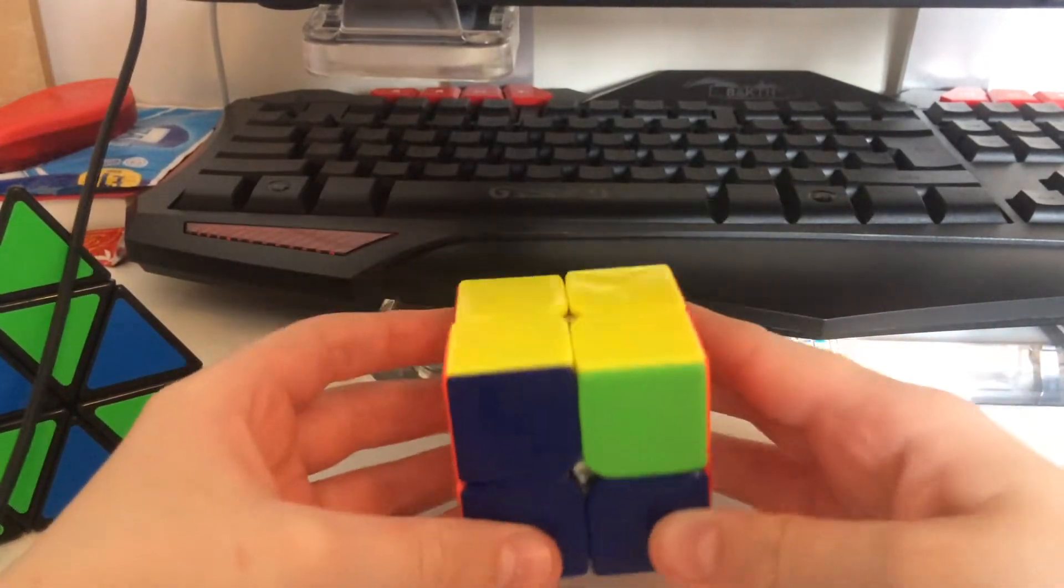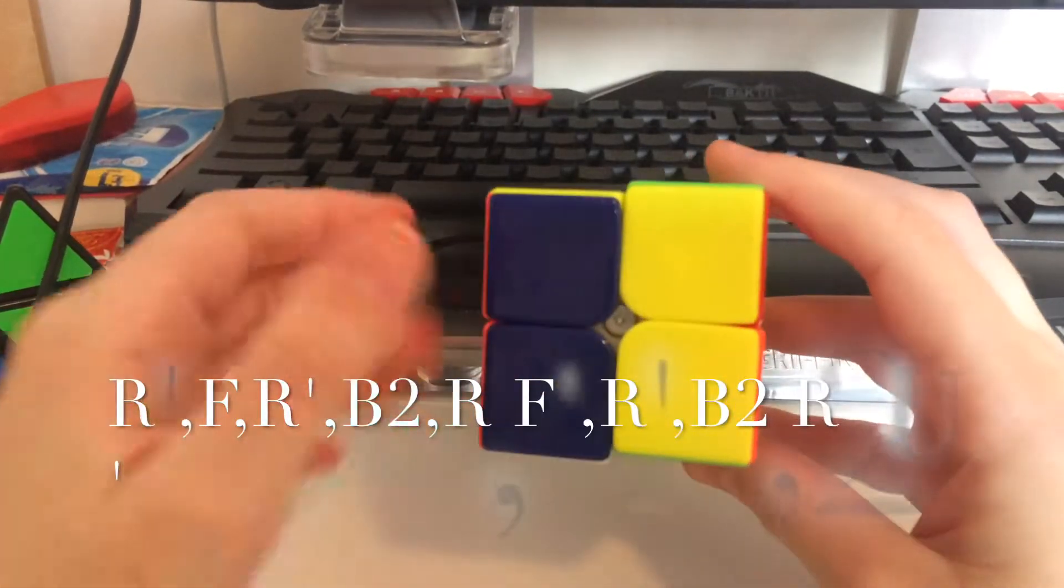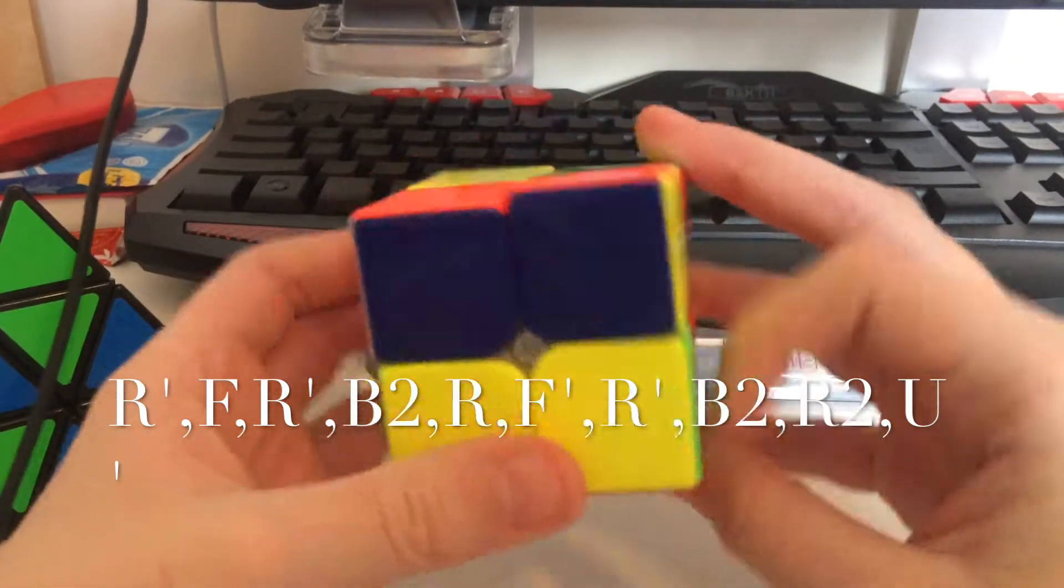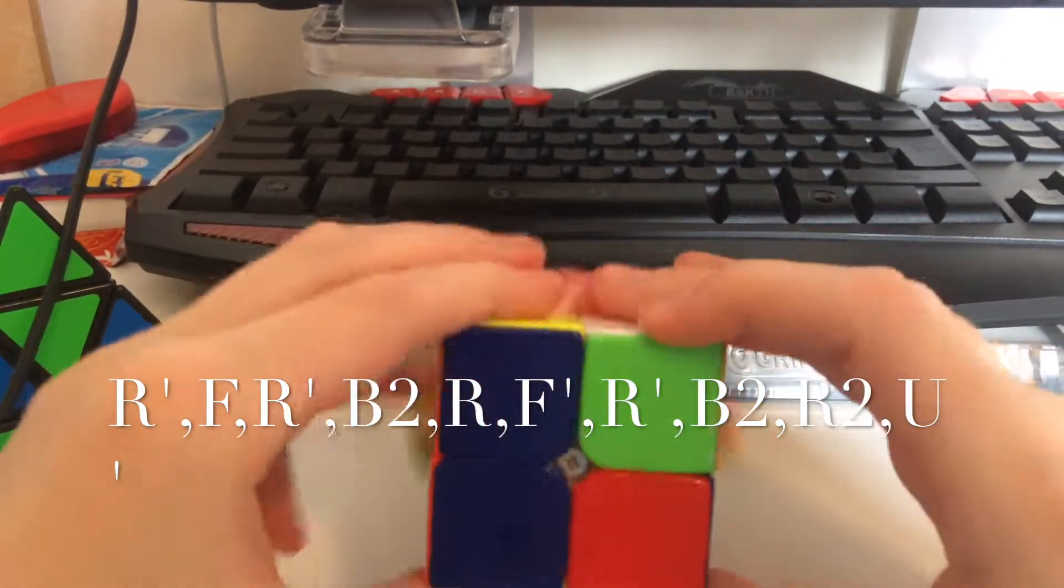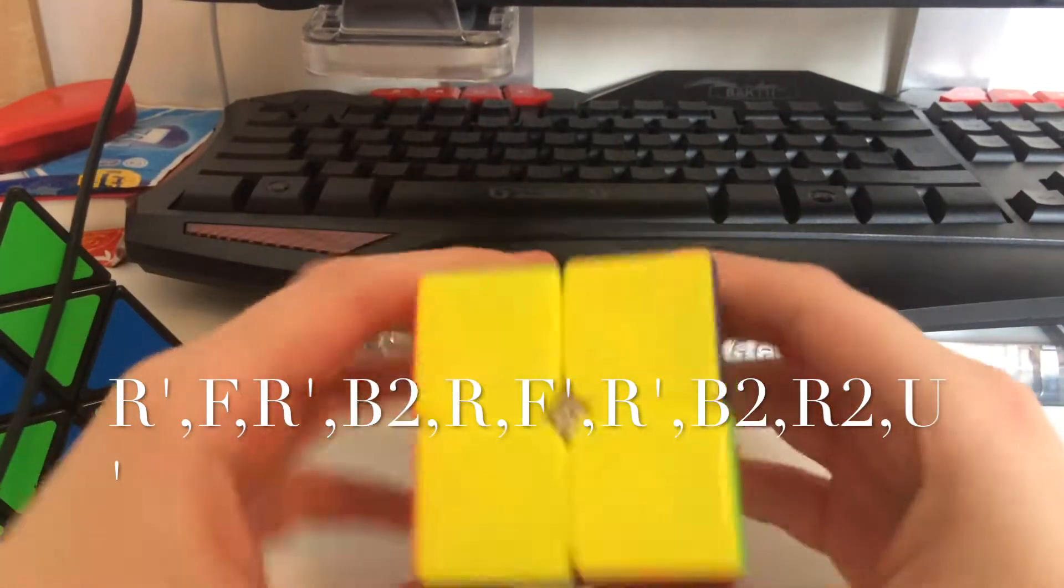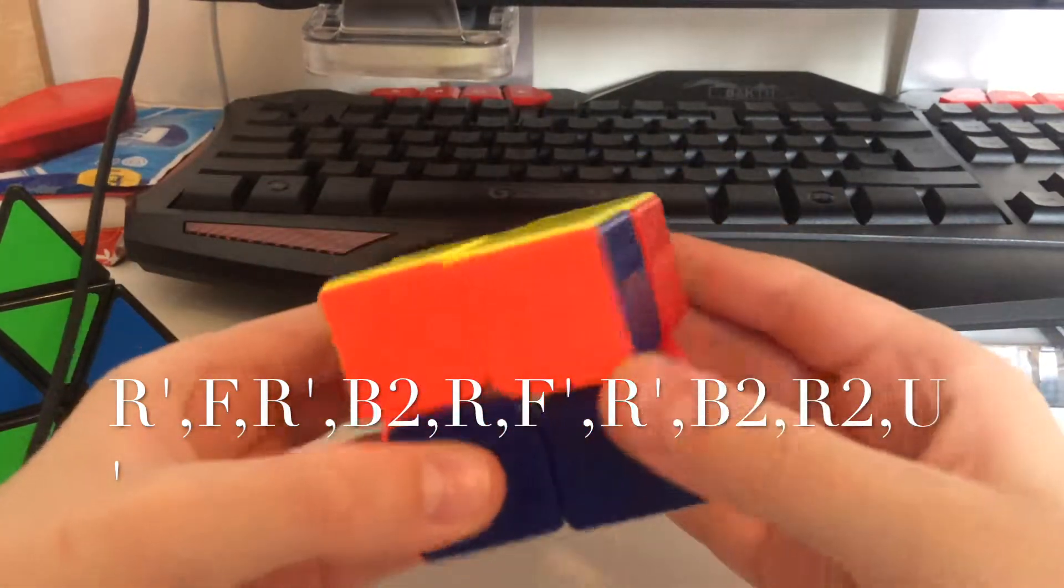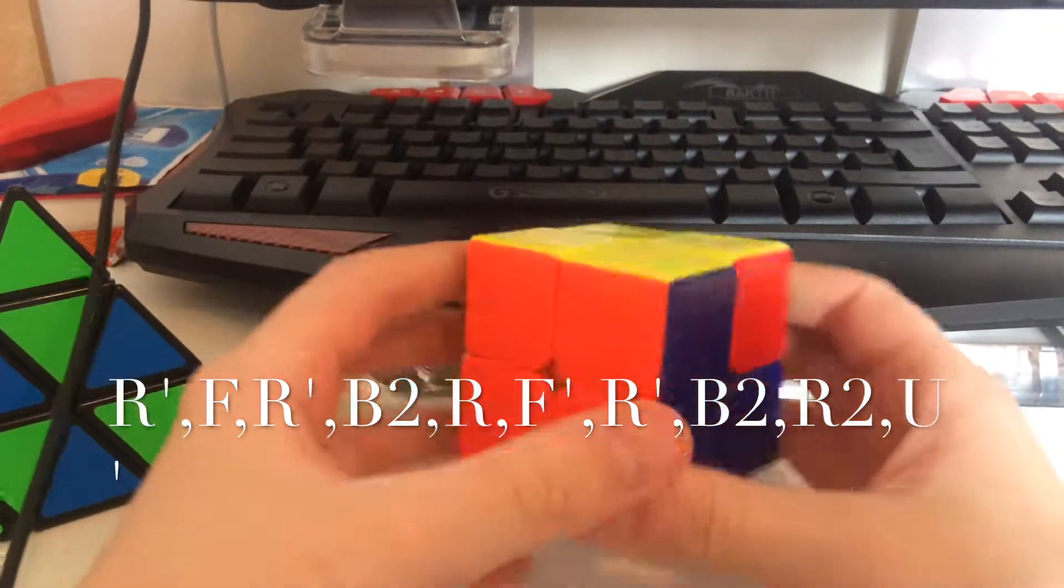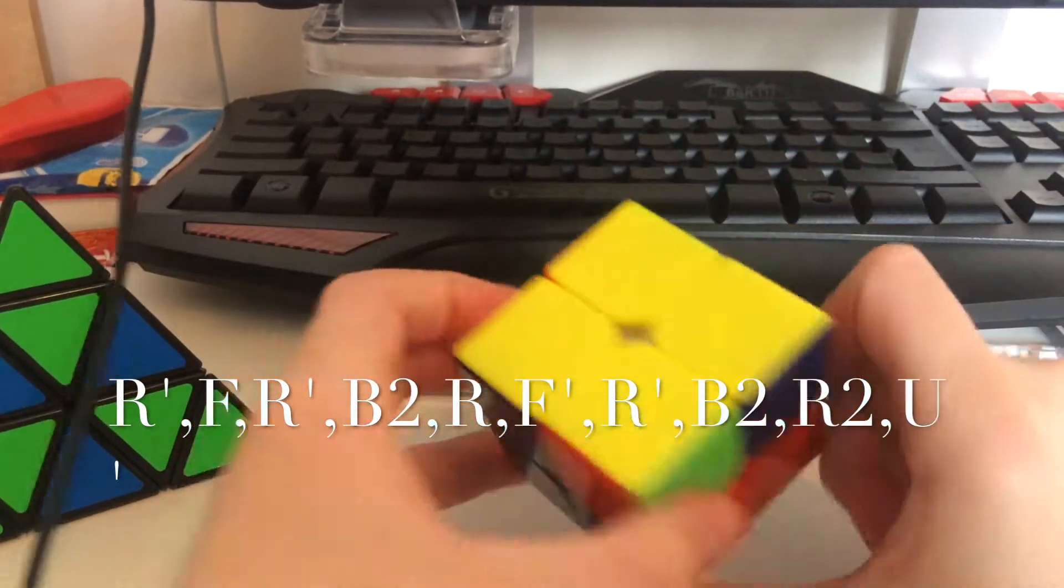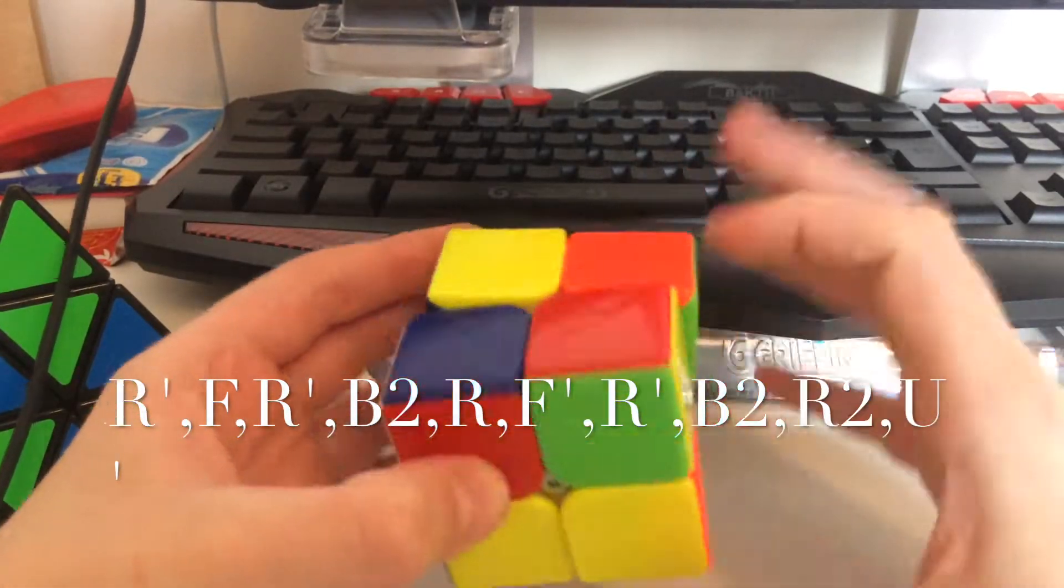Then you need to do the same algorithm. Down, I'll put it on the screen again. Across. Down. Back. Up. Across. Down. Back. Up. You'll just do the same as before. You've got this now, so you just do the same as before. The same algorithm.